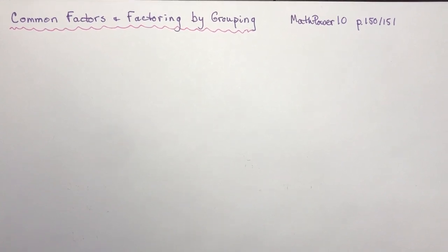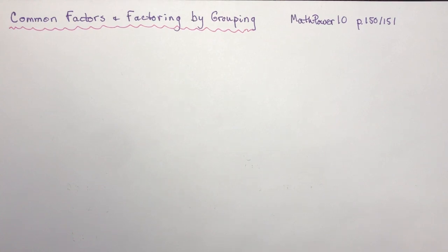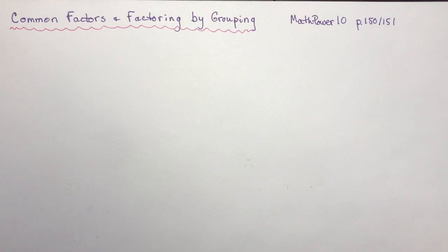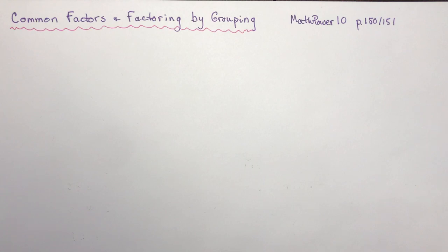Common factors and factoring by grouping. This is the start of our factoring lessons — very essential skills that you need for the rest of your math life. You need to know how to factor and do it really well. The most important start to factoring is to always look for a common factor. So before we start factoring terms with variables, let's talk about what a factor is.